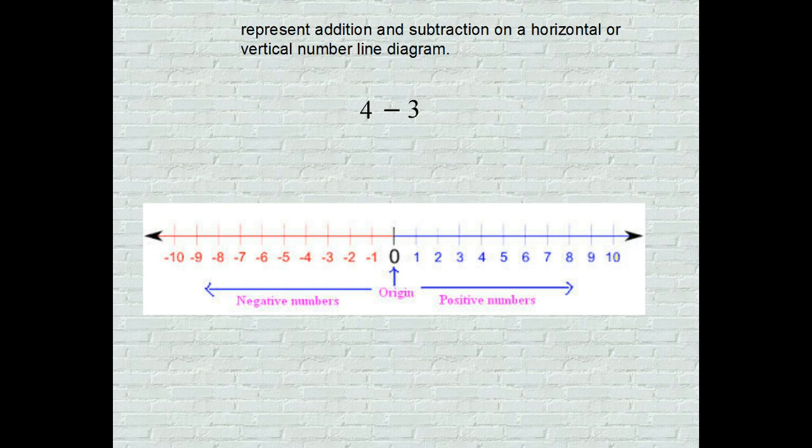4 take away 3, we all know the answer to that. On a number line diagram we start at 0, draw the arrow going towards 4, and as we did before, we're going to draw this line above for our next part of the problem.